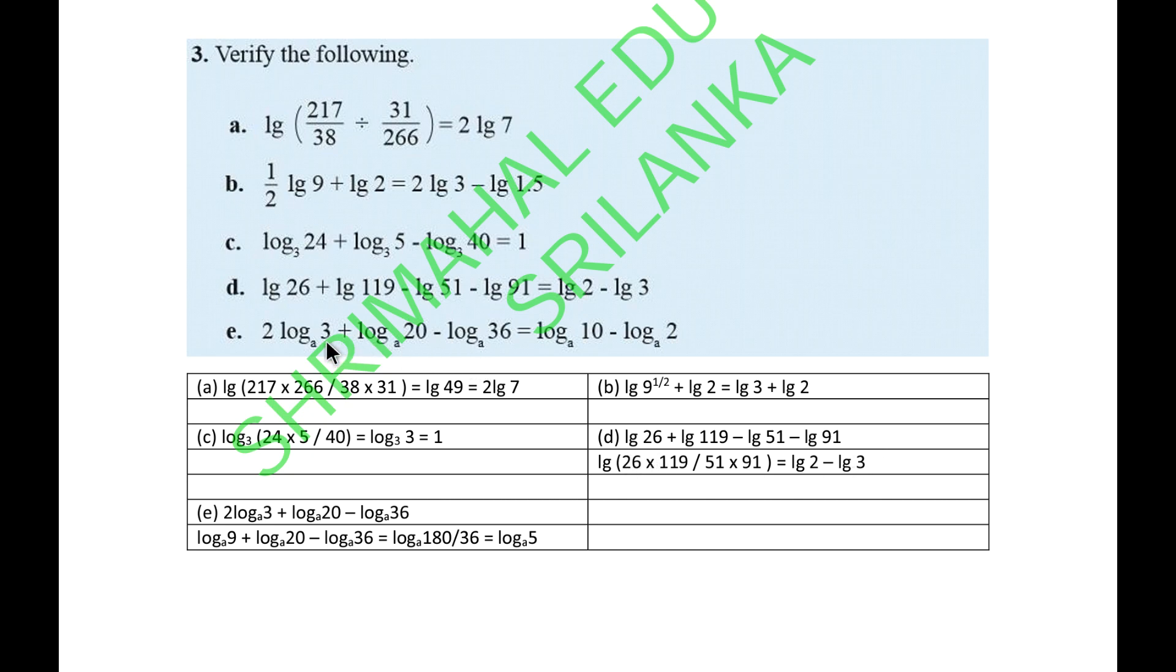Last one, 2 log a3, log a20, log a36, log a10, log a2. Here 3 to the power 2. Then here 9 times 20 is 180 divided by 36. That could be 5, log a5. Here also it proves log a5.